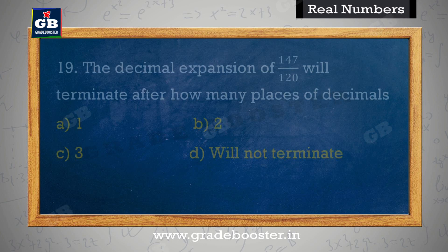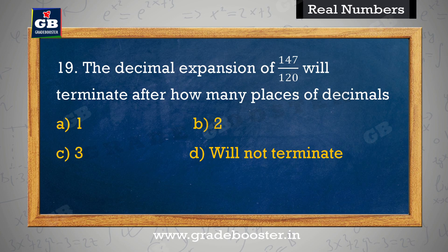A decimal expansion of 147 by 120 will terminate after how many places of decimals? 147/120 ka decimal expansion kitne sthan ke baad samapt hoga? A. 1, B. 2, C. 3, D. Will not terminate.